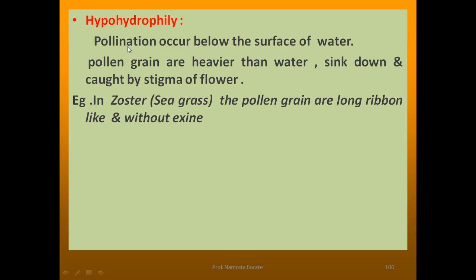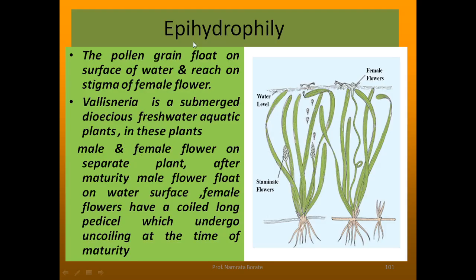Hydrophily is of two types: first, hypo-hydrophily, and second, epi-hydrophily. In hypo-hydrophily, pollination occurs below the surface of water. The pollen grains are heavier than water, so they sink down and are caught by the stigma of the female flower. This is commonly observed in Zostera, also known as sea grass. The pollen grains are long, ribbon-like, and without exine. In epi-hydrophily, pollen grains float on the surface of water and reach the stigma of the female flower.